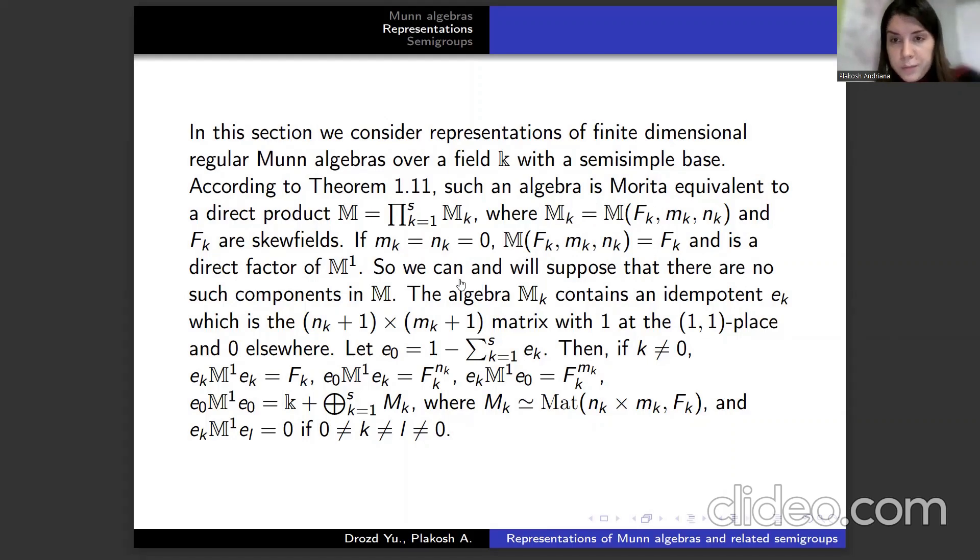If mₖ and nₖ equal 0, then Mₖ is Fₖ is a direct factor of M¹. So we can and will suppose that there are no such components in M. The algebra Mₖ contains an idempotent eₖ, which is the (mₖ+1) by (mₖ+1) matrix with 1 at the (1,1) place and 0 elsewhere. We have some conditions to lead through.